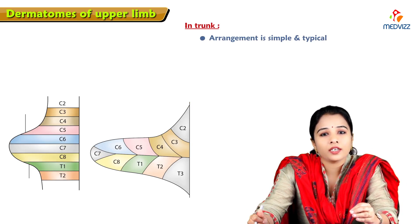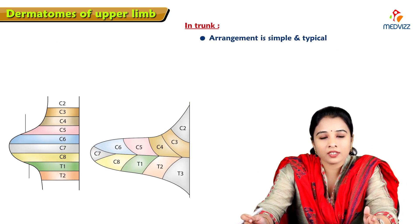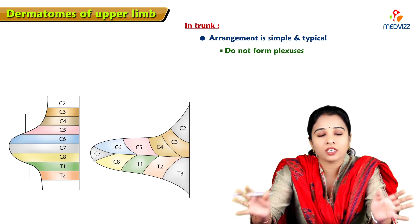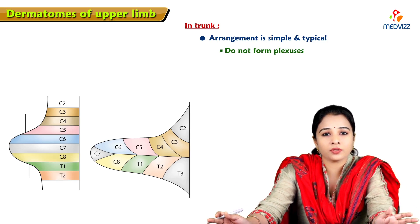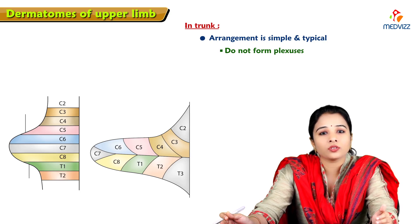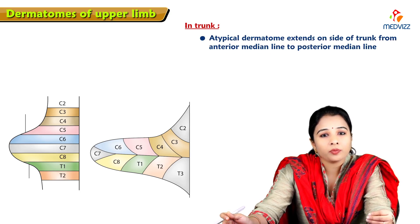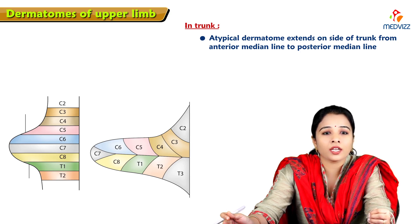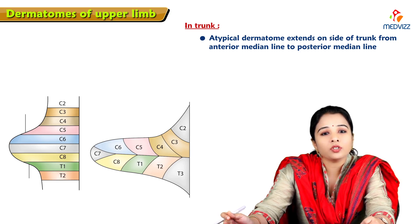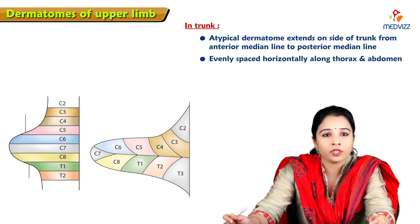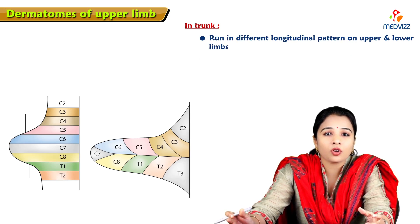In the trunk, the arrangement of dermatomes is simple and typical because the spinal nerves do not form any plexus in the trunk — they go directly to innervate the skin on the dorsal side in a segmental fashion. A typical dermatome extends on each side of the trunk from the anterior median line to the posterior median line. The dermatomes are evenly spaced horizontally along the thorax and abdomen, but they run in a different longitudinal pattern on the upper and lower limbs.